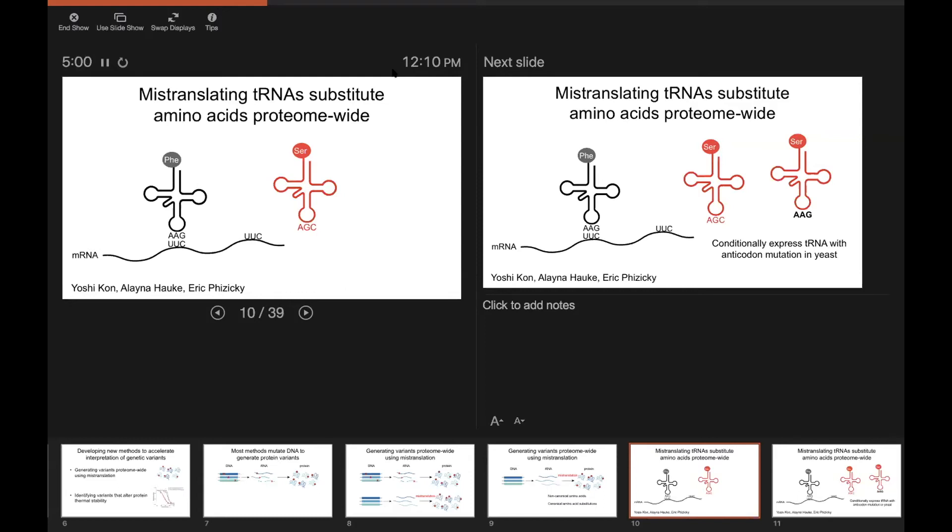So in this example here, the phenylalanine codon UUC is typically decoded by a phenylalanine tRNA with a complementary anticodon. However, some tRNAs, such as serine tRNAs, are completely plastic at the anticodon.